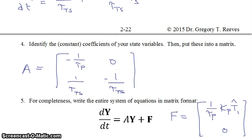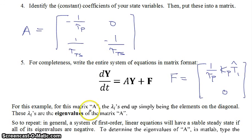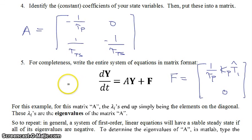To wrap up: in this example, the lambdas end up just being the diagonal elements of matrix A — the first lambda is −1/tau_P and the second is −1/tau_sensor. Both are negative, so the system is stable. These lambdas are called the eigenvalues of matrix A. In more difficult examples, you can't simply read the eigenvalues off the diagonal, so you would put your matrix into MATLAB and use the eigenvalue function to find them. If all eigenvalues are negative, the system is stable; if even one is positive, the system is unstable.